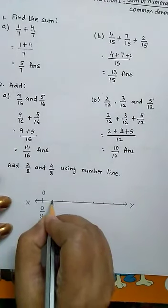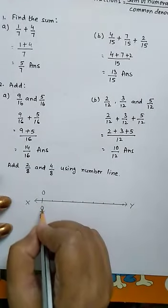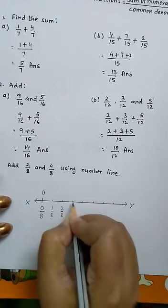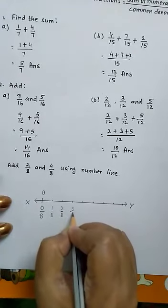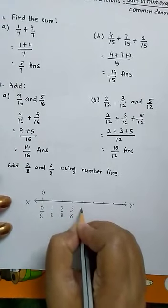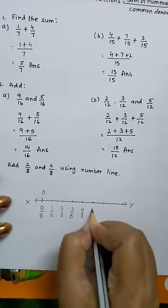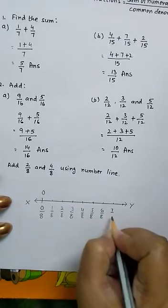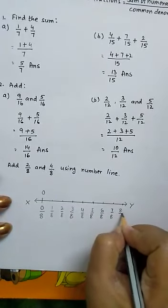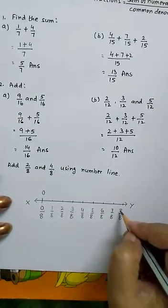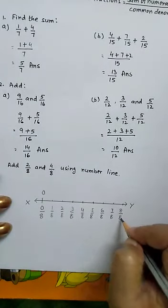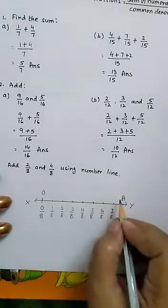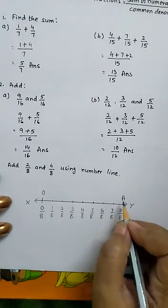Now the fractions represented by these marks are: this is 0 by 8, 1 by 8, 2 by 8. This is 3 by 8, 4 by 8, 5 by 8, 6 by 8, 7 by 8, 8 by 8, where the numerator and denominator becomes equal. That point is known as A. And OA represents 1 unit.